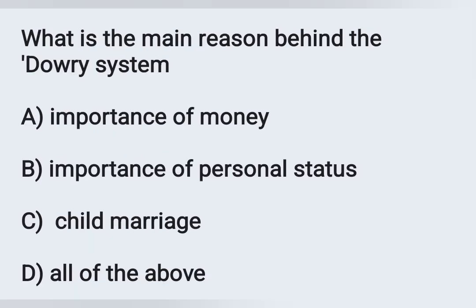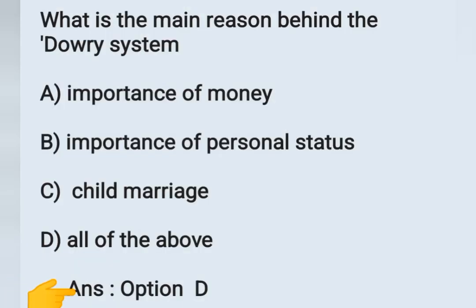The next question: what is the main reason behind the dowry system? Options: A) Importance of money, B) Importance of personal status, C) Child marriage, D) All of these. The main reasons behind the dowry system include importance of money, importance of personal status, and child marriage — all are correct. Option D is the correct answer.